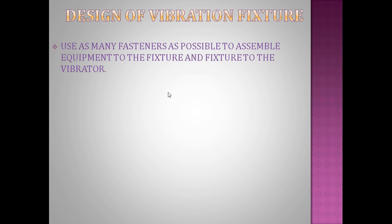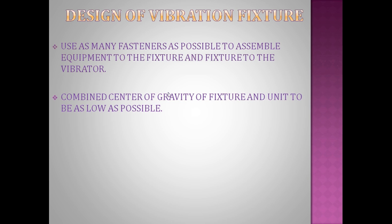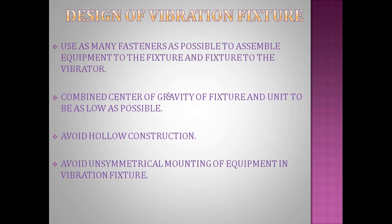Twelfth, use as many fasteners as possible to assemble the equipment, as this increases area contact and stiffness. It has been observed that one additional bolt increases the natural frequency by around 50 Hz. Thirteenth, keep the combined center of gravity of the fixture and unit as low as possible — increasing the height decreases the natural frequency. Fourteenth, avoid hollow construction, as it reduces stiffness and natural frequency. If hollow sections cannot be avoided, fill them with composite materials, PU foam, or sand.